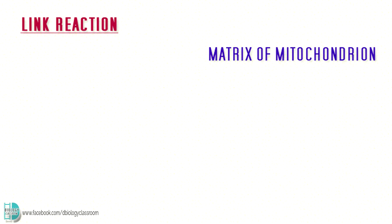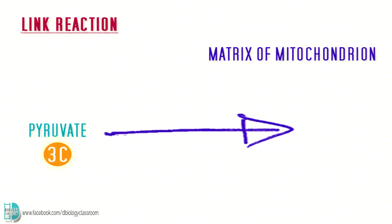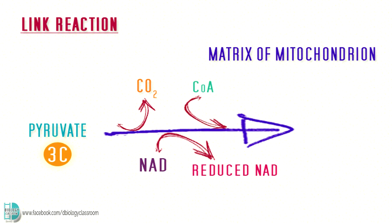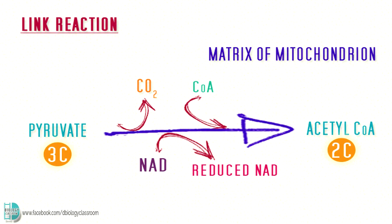Pyruvate enters the matrix of the mitochondrion for the link reaction. Three events occur here. Number one, decarboxylation, where a carbon dioxide is released. Number two, dehydrogenation — similar to what happened in glycolysis, a hydrogen is removed and a molecule of NAD is reduced. Number three, coenzyme A is added. These three steps convert pyruvate into acetyl-CoA, which will then be involved in the Krebs cycle.